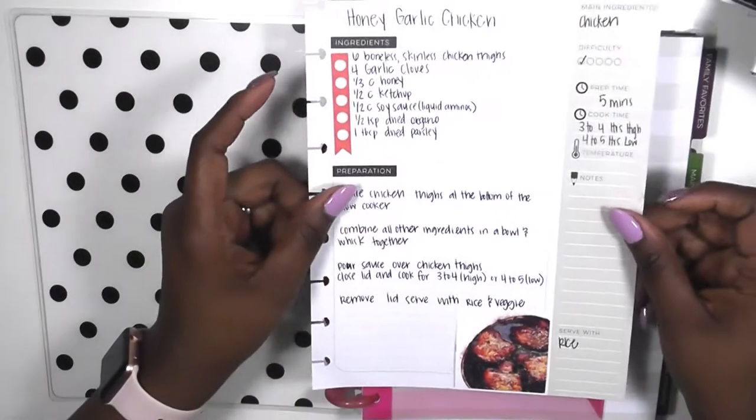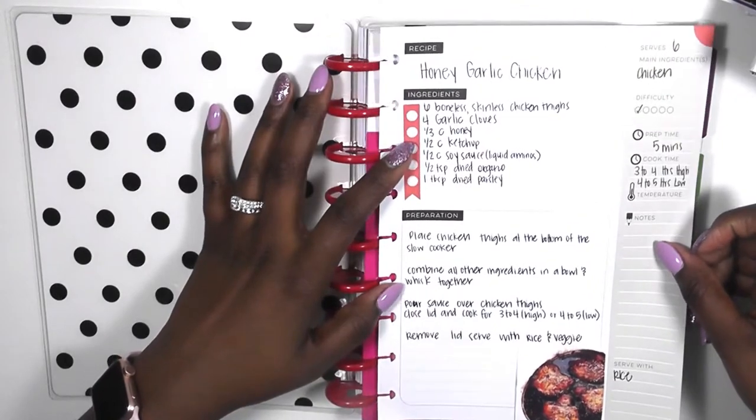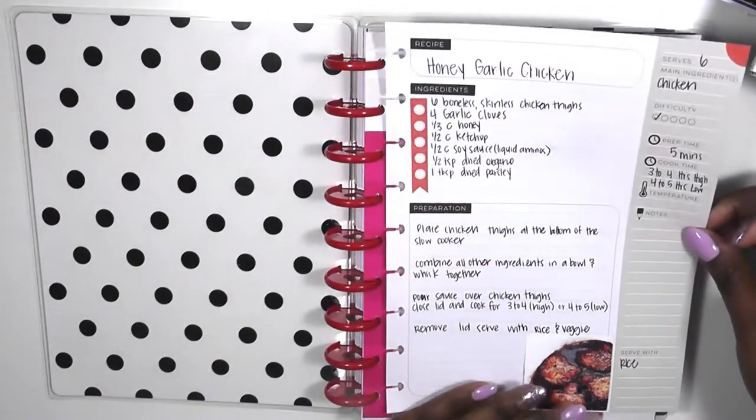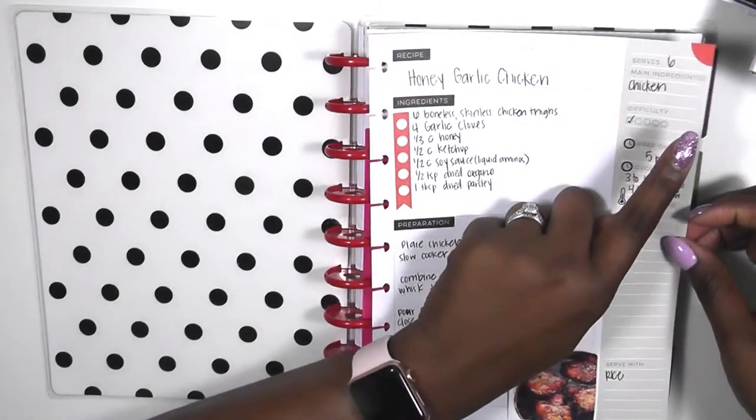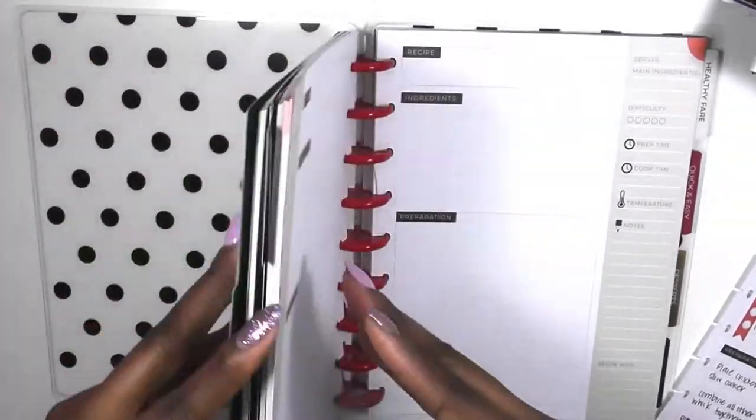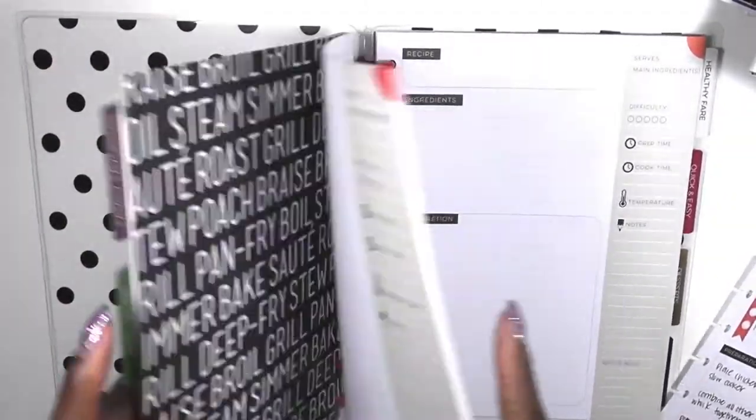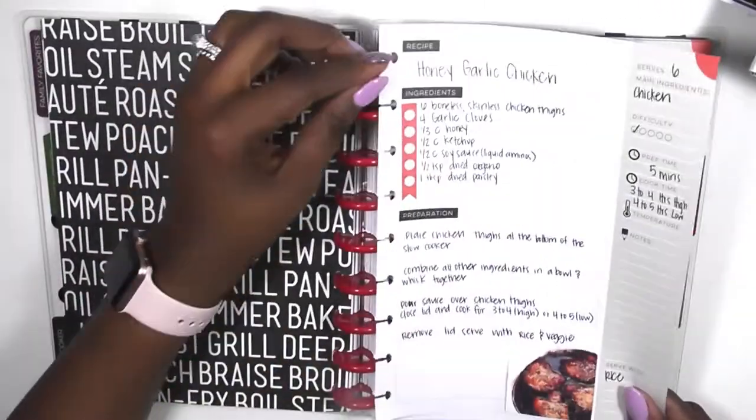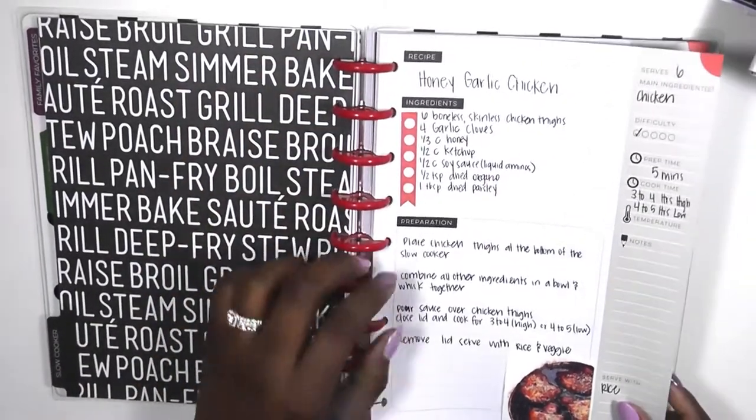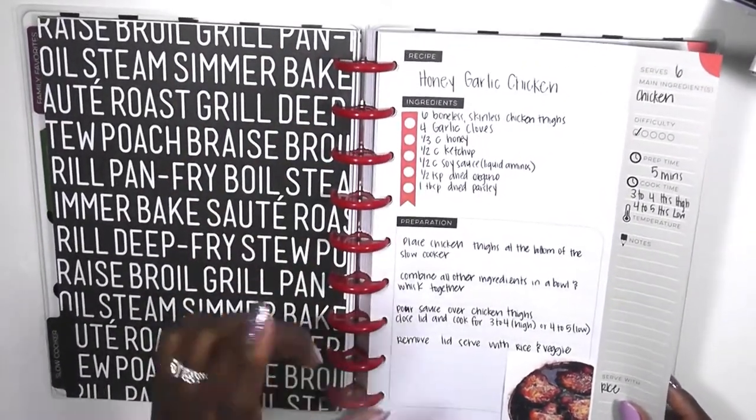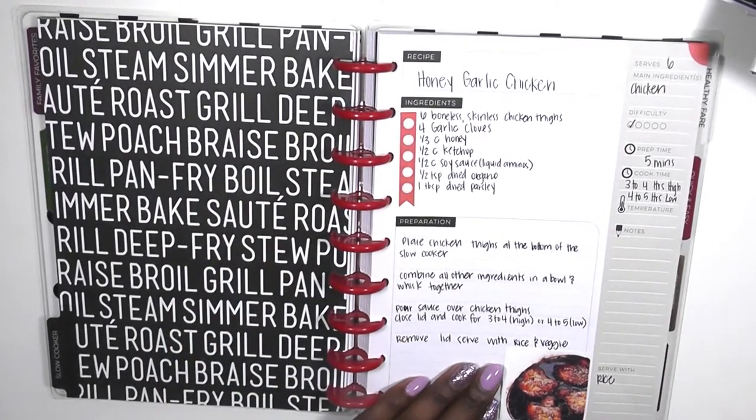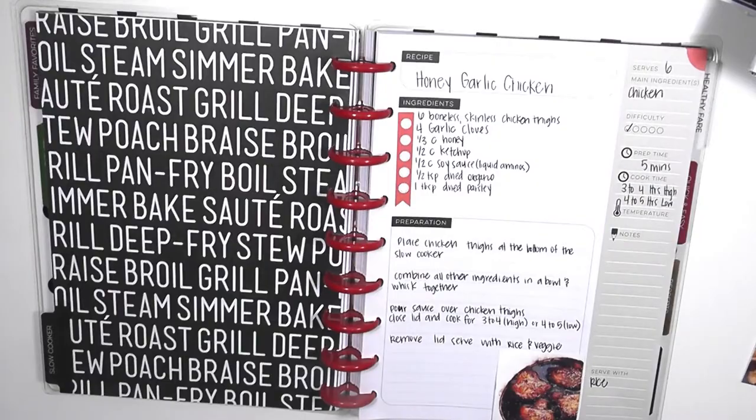So here's my first entry and it's for honey garlic chicken. It's an orange tab so I know it goes in the slow cooker section. I'm gonna go ahead and pop that over in there. So that is my first one, and as you can see I use an orange flag just trying to color coordinate everything and keep it together.